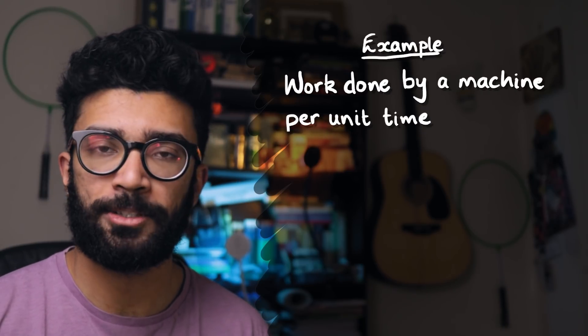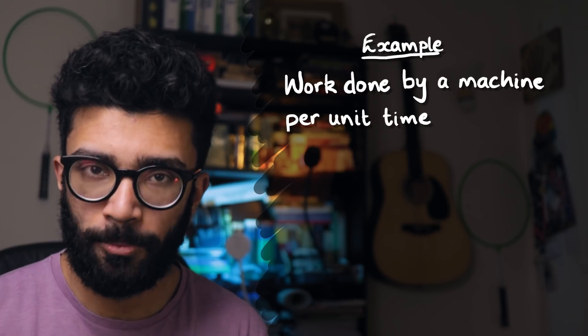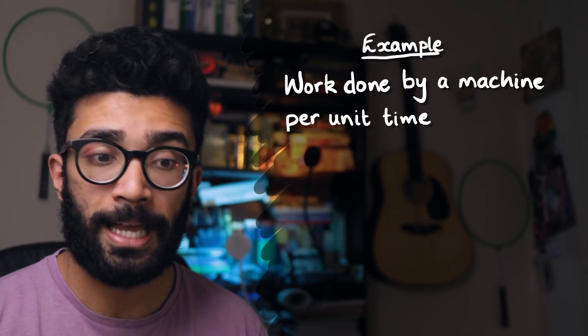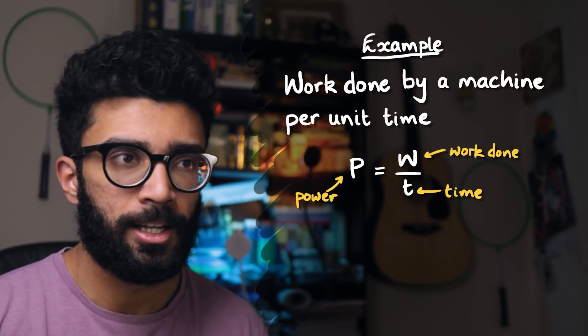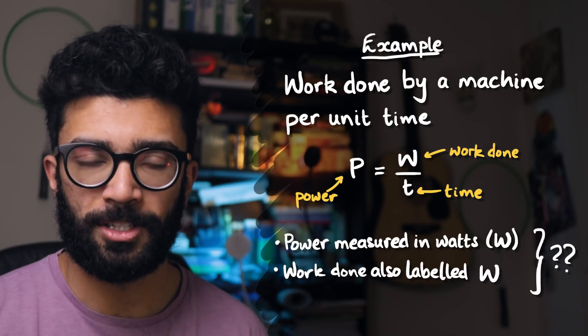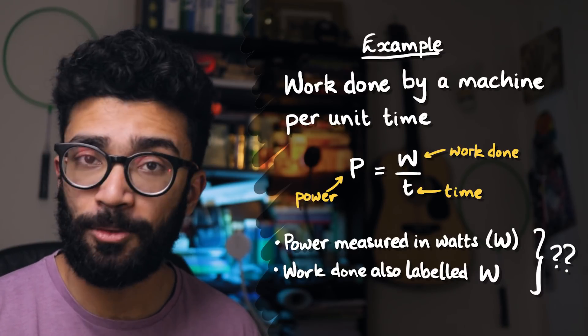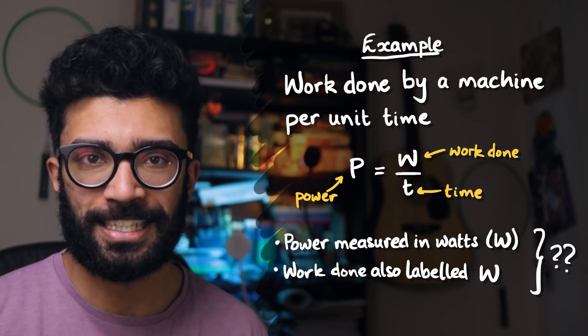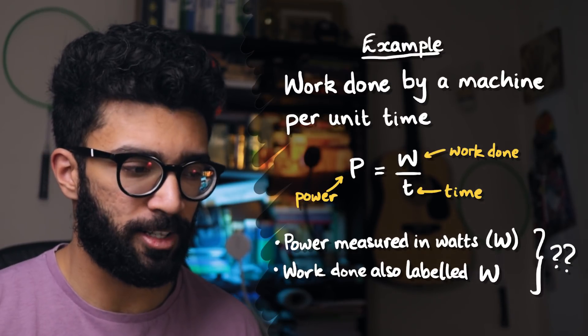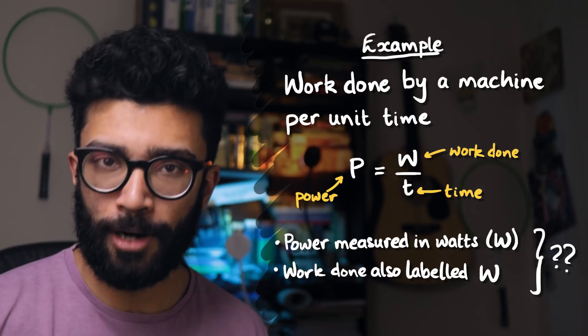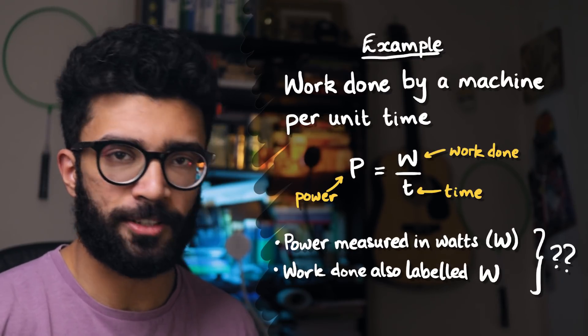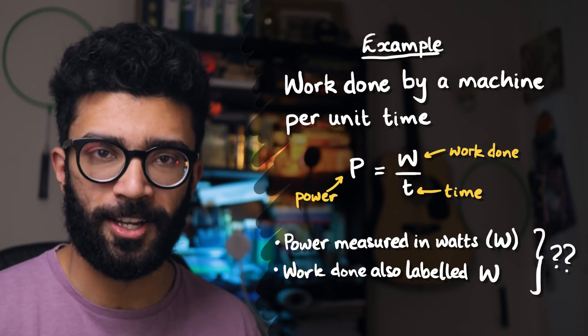For example, you might have tried to solve some physics problems that relate the work done by, say, a machine, and specifically talking about the work done by that machine per unit time, how much work an engine is doing, for example, per unit time, and this is the power of that engine. Power is measured in watts, and we often signify work with the letter W as well. So we have to try and distinguish between W for watts and W for work, and quite often we just have to do this based on context rather than any difference in the way that we write the two W's. So we want to try and avoid this problem with this new unit of momentum that we're going to be creating in this video.